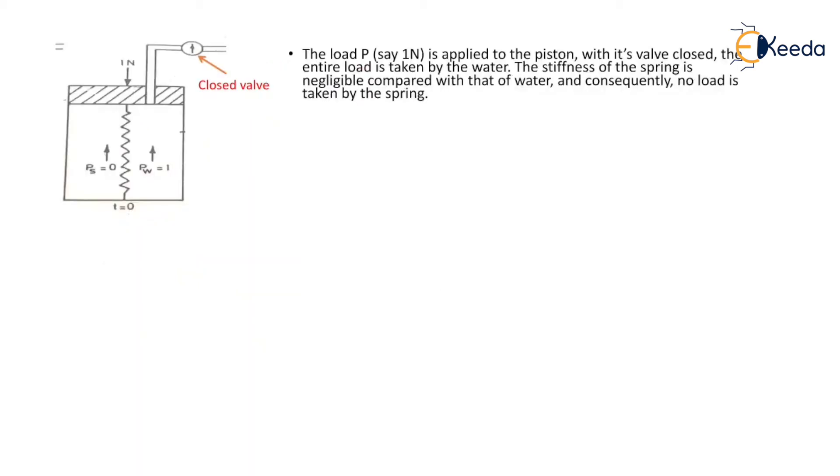The load P, say 1 newton, is applied to the piston with its valve closed. The entire load is taken by the water. The stiffness of the spring is negligible as compared to that of water. From the equilibrium we get Pw plus Ps equal to P, where Pw is load taken by the water, Ps is load taken by spring, and P is the total load applied.